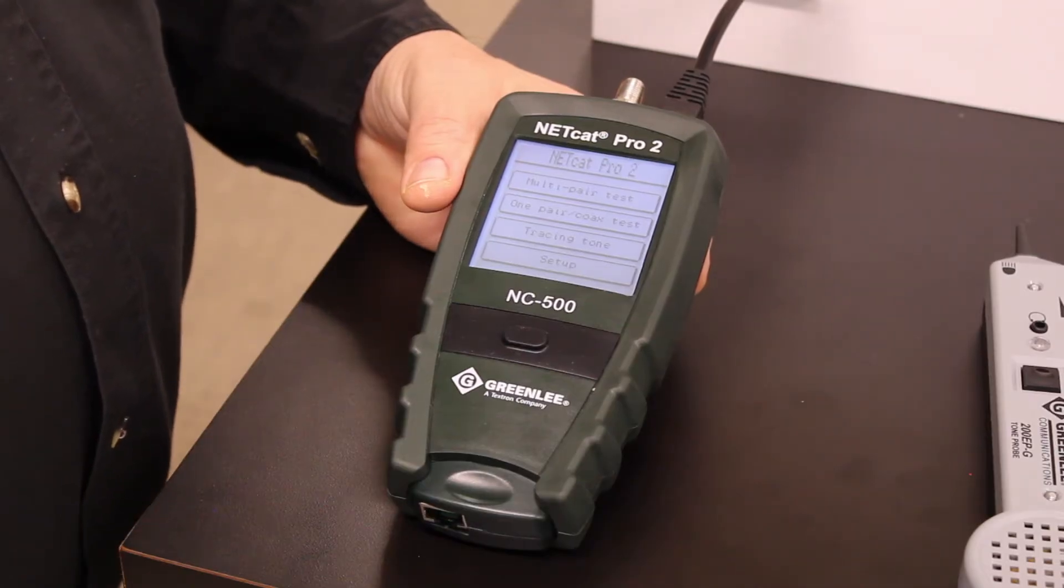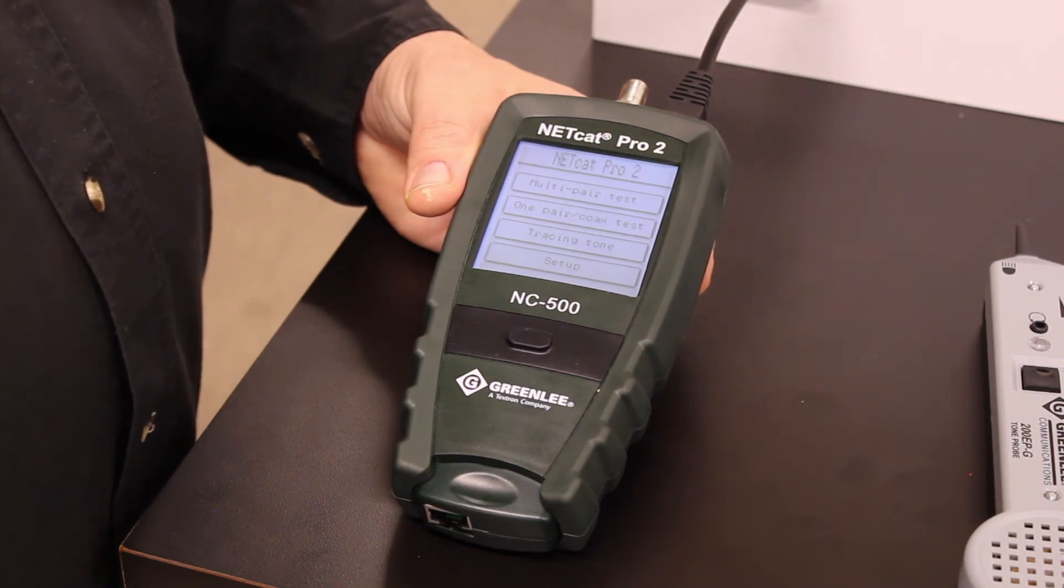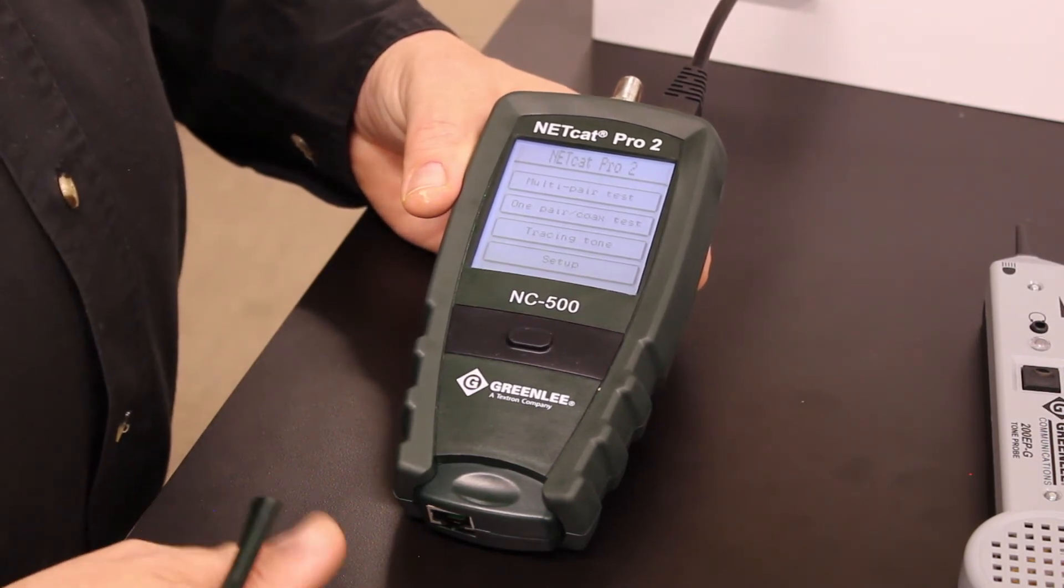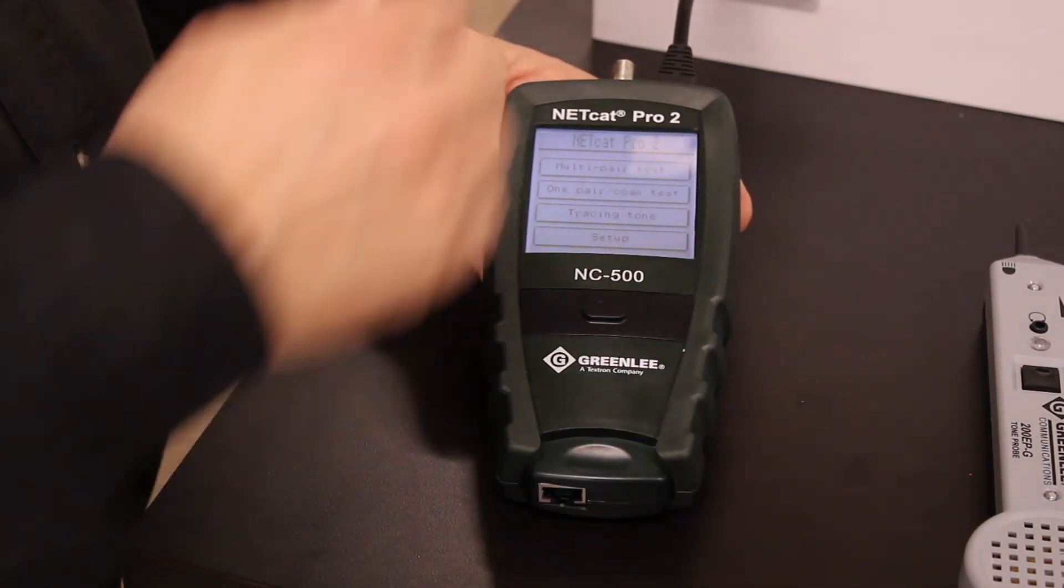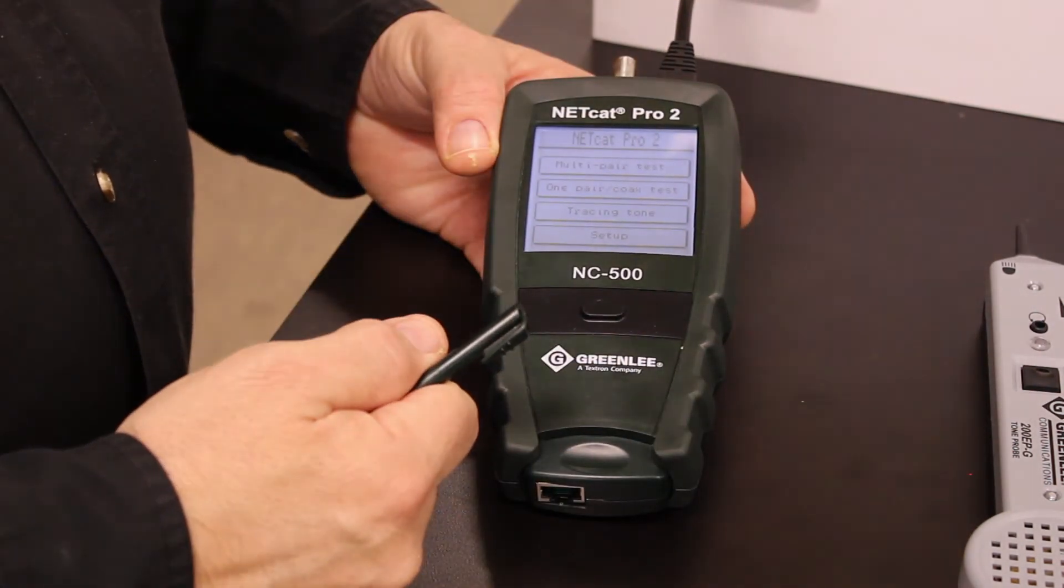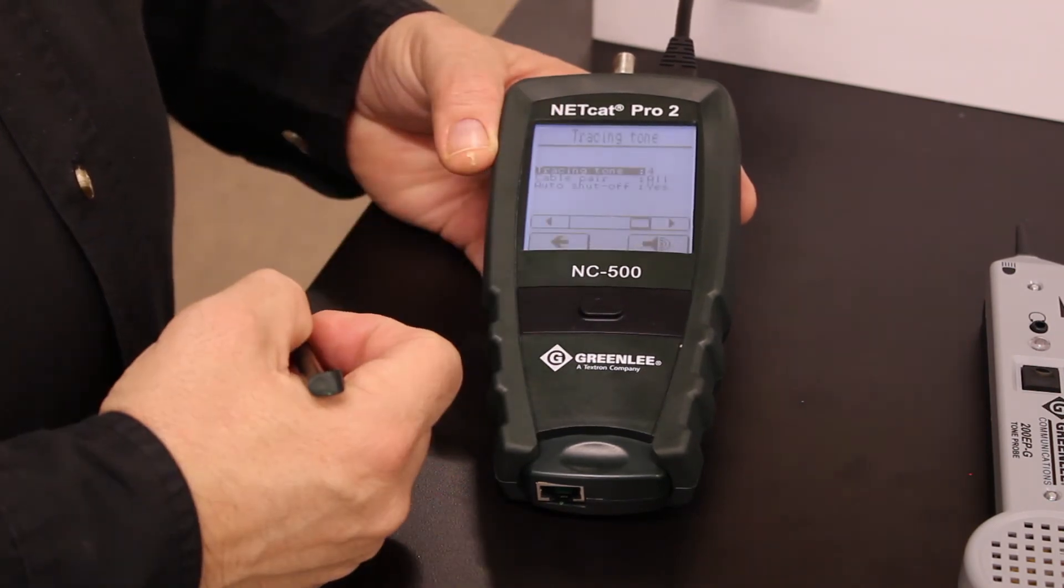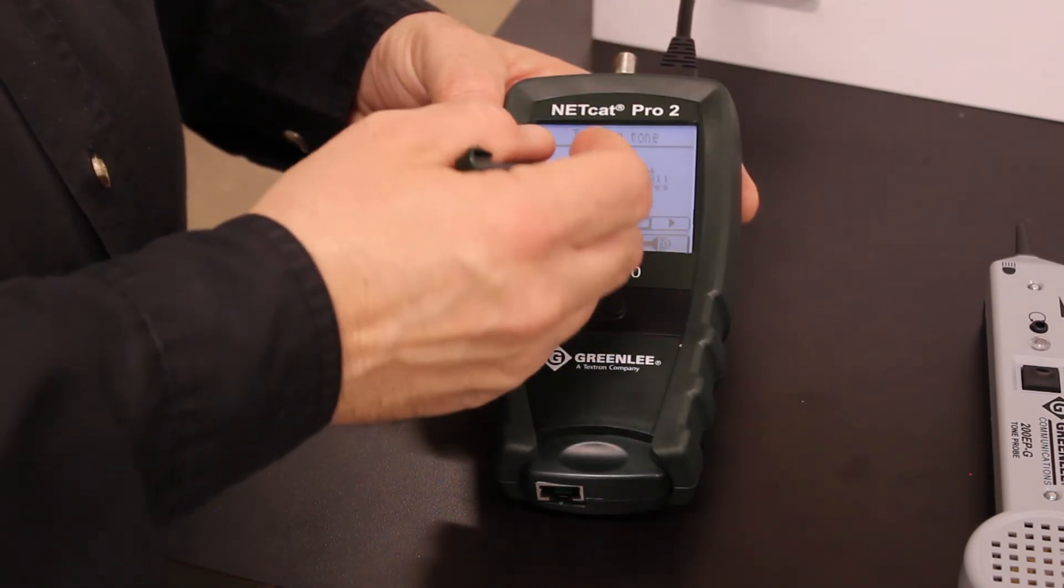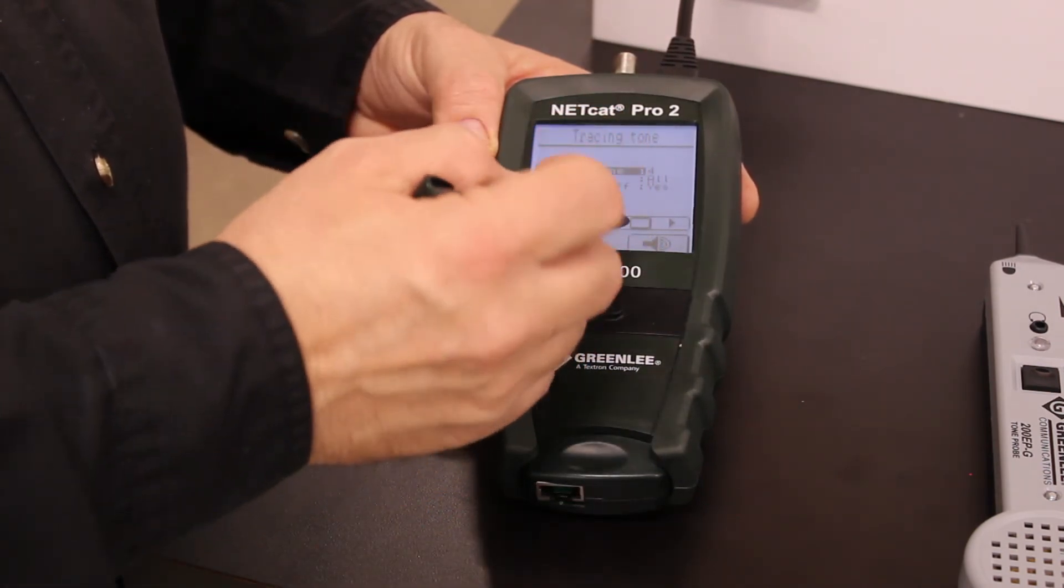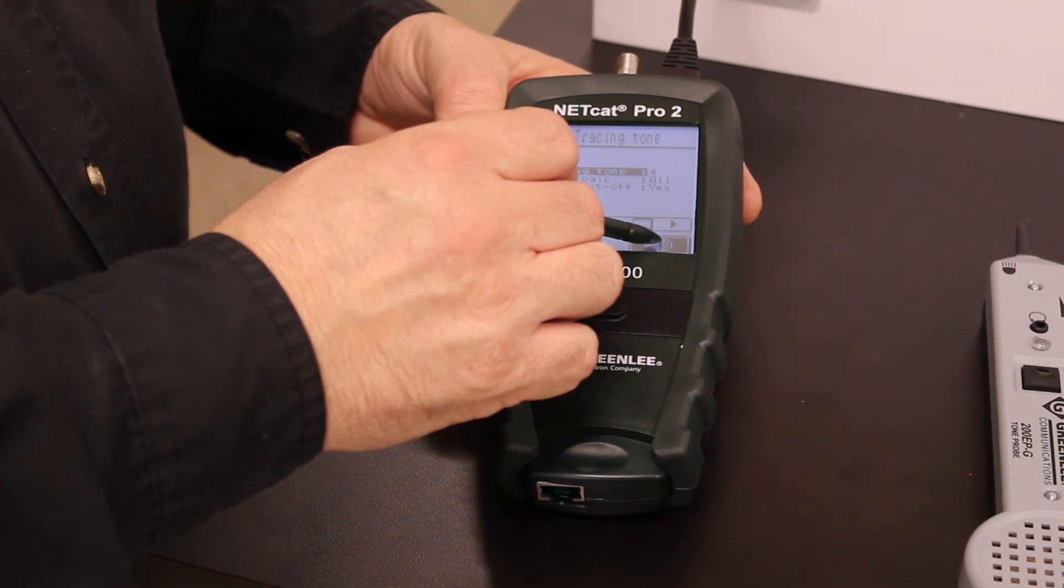A specific cable run can also be identified with the NC500 by using tracing tone. To use tracing tone, you would first plug the unit into a jack using the network patch cable, and then select the tracing tone function. The tone is already active, but at this point you can select four different types of tones. Number 4 makes this sound and press the speaker icon to audition the sound. Tone 3, tone 2, and tone 1.